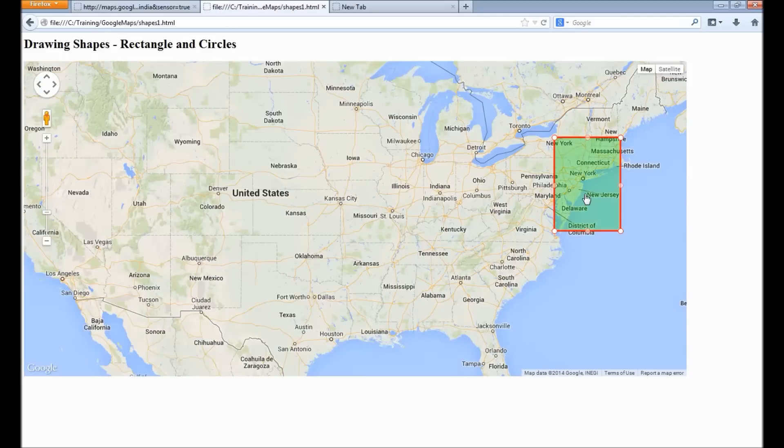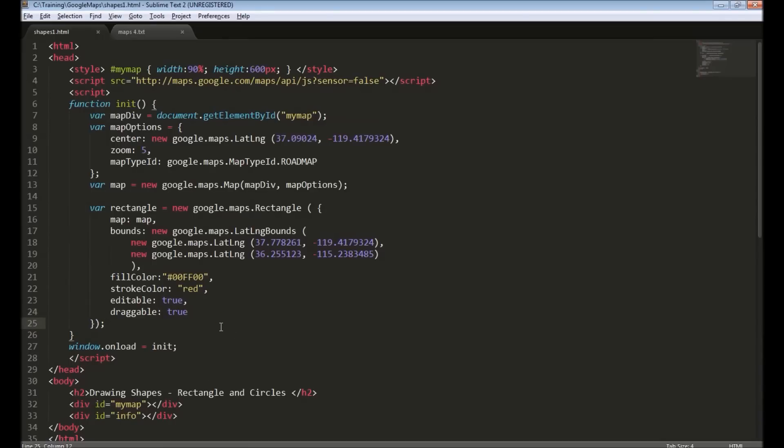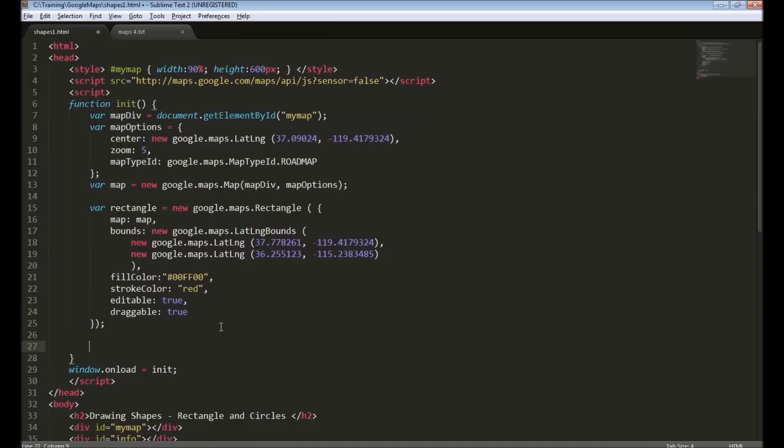When we are resizing the rectangle and moving it around, Google Maps trigger some events which we can listen to. To listen to this event, we can add a listener for the rectangle and then specify the listener, that is bounds_change, and provide a function that needs to be called.